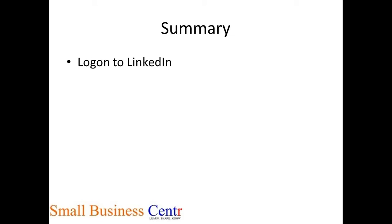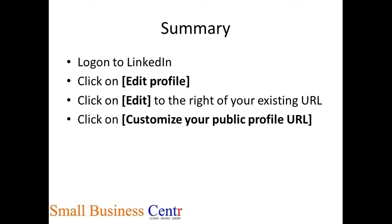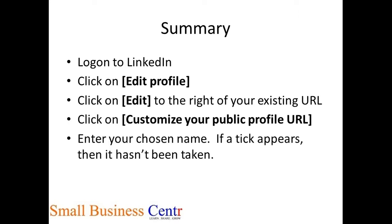So to quickly summarise: log on to LinkedIn, click on edit profile, click on edit to the right of your existing URL, click on customise your public profile URL on the right hand side, enter your chosen name, and if a tick appears then it hasn't been taken, and then you can click on set custom URL.